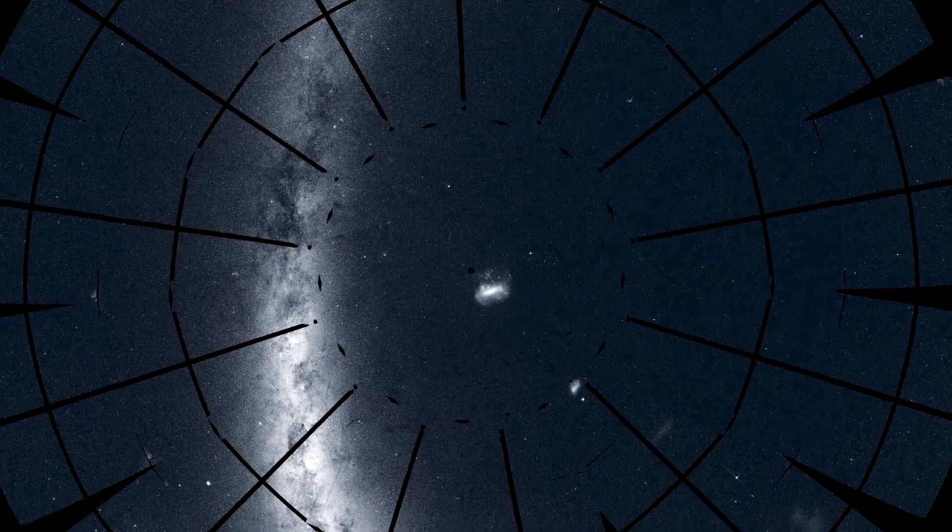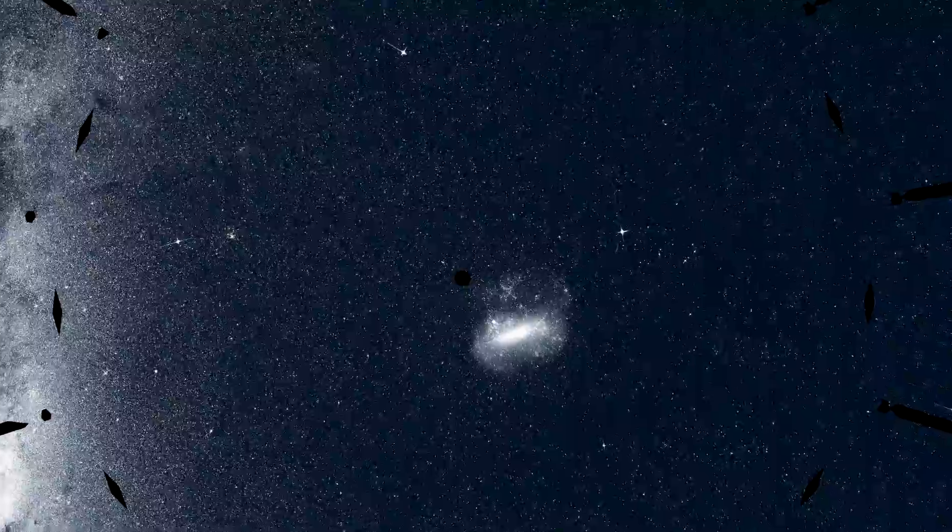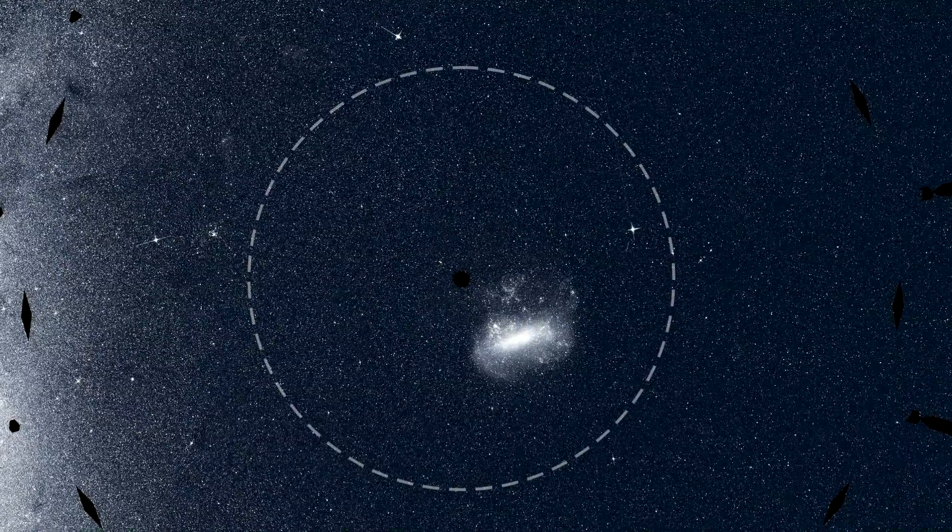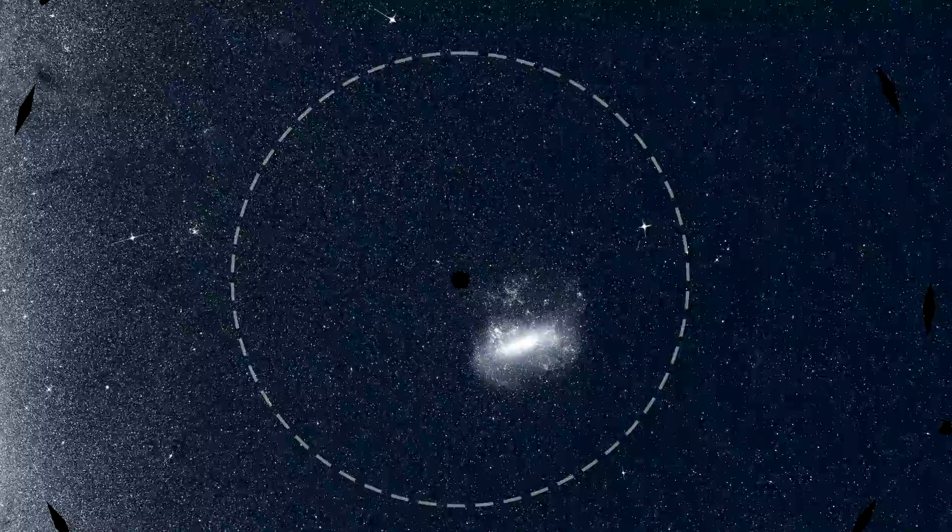Zooming into the mosaic, it's clear how much detail and how many stars TESS has captured. At the center is the continuous viewing zone, where the view of one TESS camera overlaps all 13 sectors.